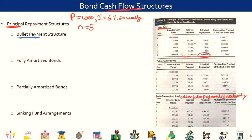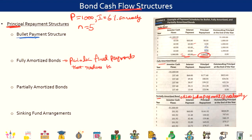Now let's talk about fully amortized bonds. Fully amortized bonds have periodic fixed payments that reduce the bond's outstanding principal to zero by maturity. I'm going to explain this with the fully amortized bond section in the exhibit. You will see that again in year zero, you as the investor have lent 1000 to the company, and after that the issuer is going to make fixed, equal payments every year.